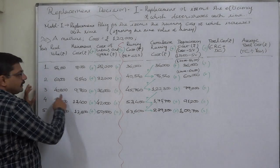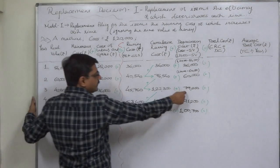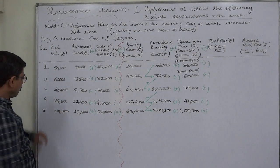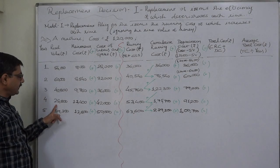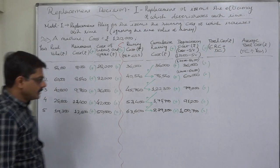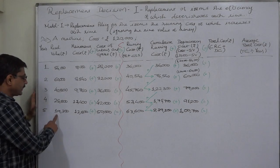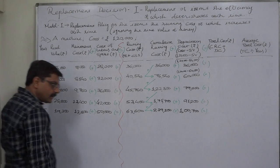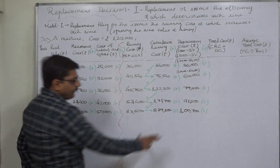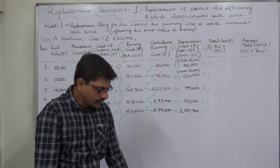For year three: one lakh twenty thousand minus forty thousand eight hundred gives depreciation of seventy-nine thousand two hundred. For year four: one lakh twenty thousand minus twenty-eight thousand eight hundred gives depreciation of ninety-one thousand two hundred. For year five: one lakh twenty thousand minus resale value of nineteen thousand three hundred gives depreciation of one lakh seven hundred.